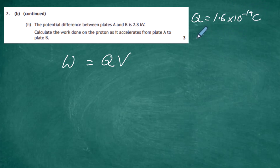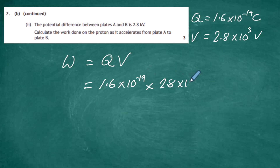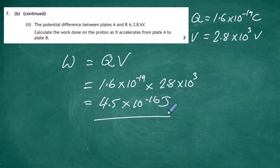The potential difference V is 2.8 kilovolts, which is 2.8×10³ volts. Substituting into the equation, the work done = 1.6×10⁻¹⁹ × 2.8×10³, giving an answer of 4.5×10⁻¹⁶ joules. Remember, work done is energy transferred and is measured in joules, so the answer is 4.5×10⁻¹⁶ joules.